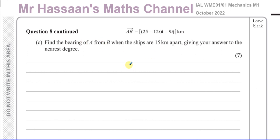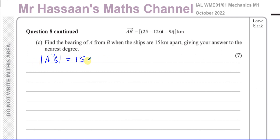So the bearing of A from B — I need to know what the vector from A to B is to find that bearing. I need to find the time when they are 15 kilometres apart. If I find the magnitude of the vector A to B and set it equal to 15, I can solve for t.